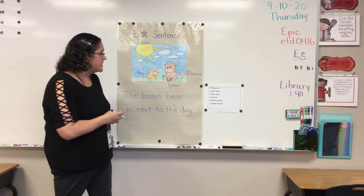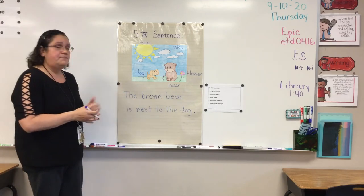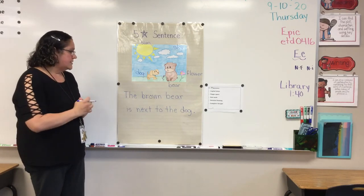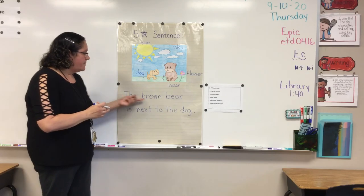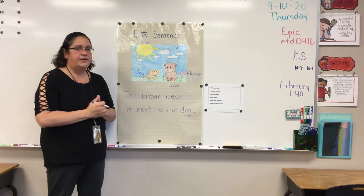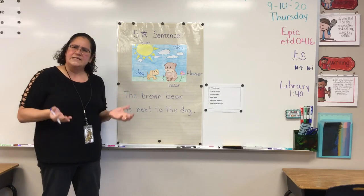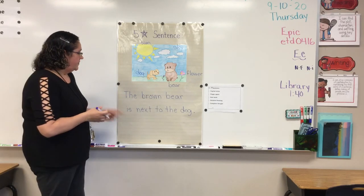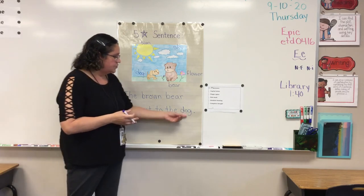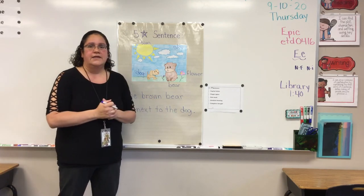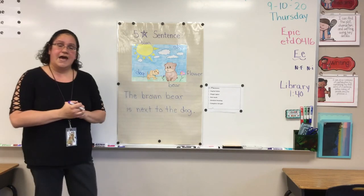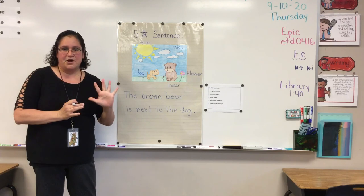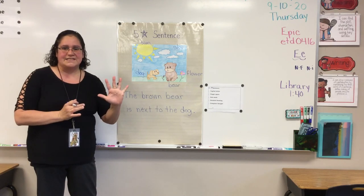And last, is this a complete sentence? Yes, it is. It's talking about the brown bear. What is the brown bear doing? The brown bear is next to the dog. And that is how you will get a five-star sentence.